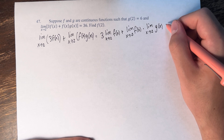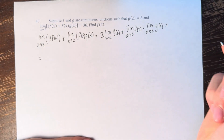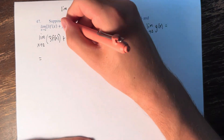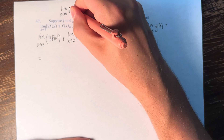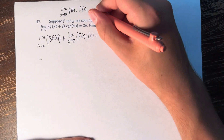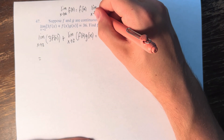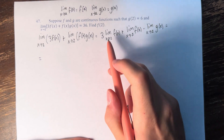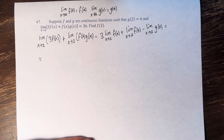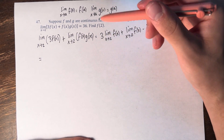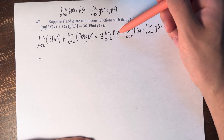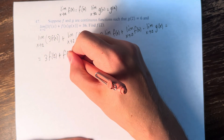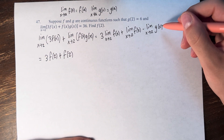We are also told that f and g are continuous functions. This means that the limit as x approaches a of f of x is equal to f of a, and the limit as x approaches a of g of x is equal to g of a. So for these limits, we can replace them with the values of the function at that x value. So the limit as x approaches 2 of f of x is equal to f of 2, and the limit as x approaches 2 of g of x is g of 2.